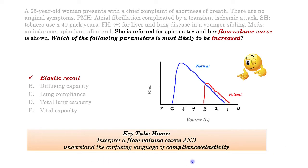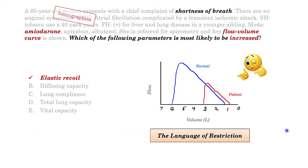That is the key take-home from this question: to be able to interpret a flow-volume curve and understand the confusing language of compliance and elasticity. I'm going to suggest that amiodarone was the cause of this restriction — it's the only demographic feature in the vignette that would support restriction.